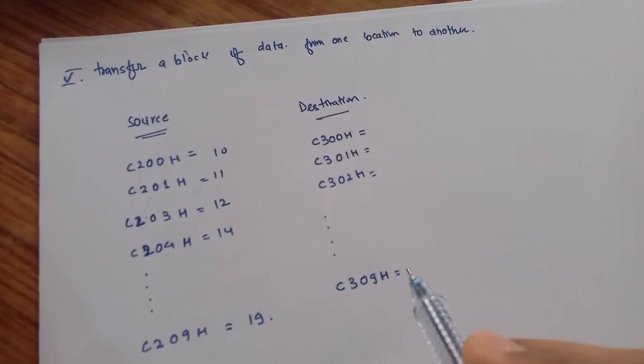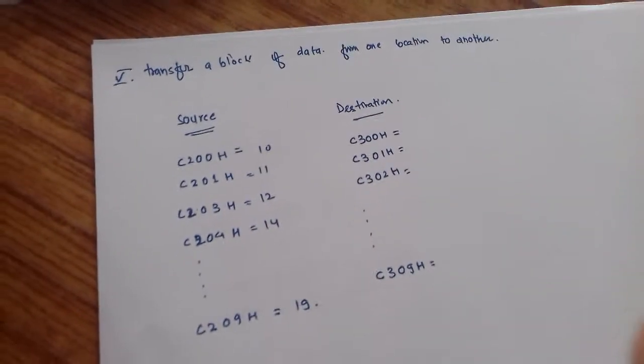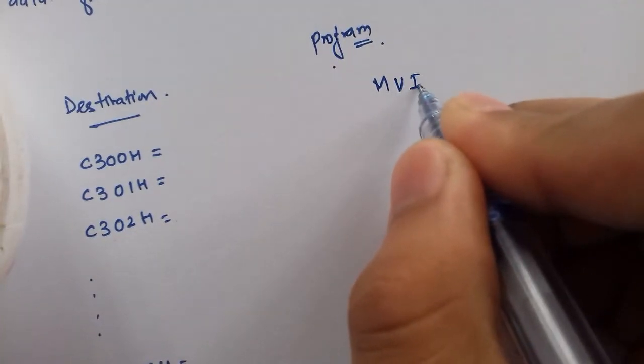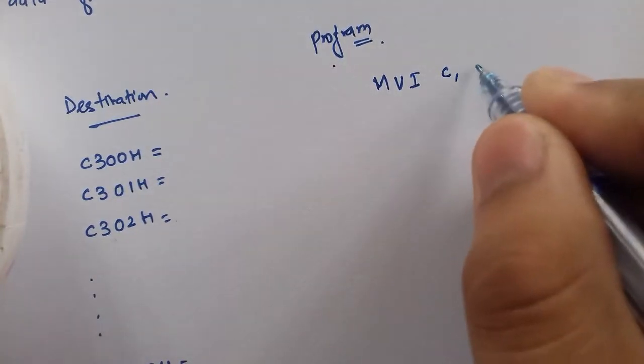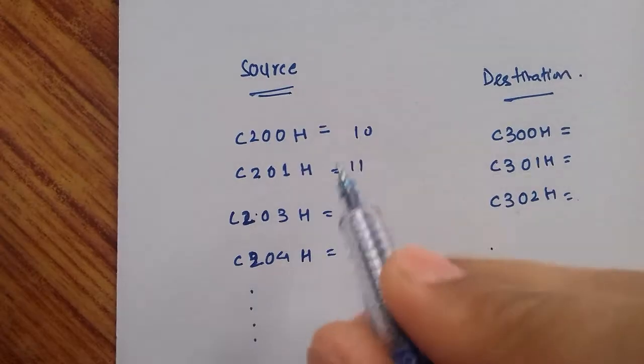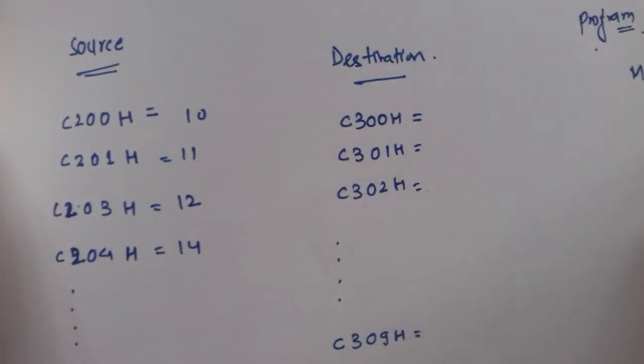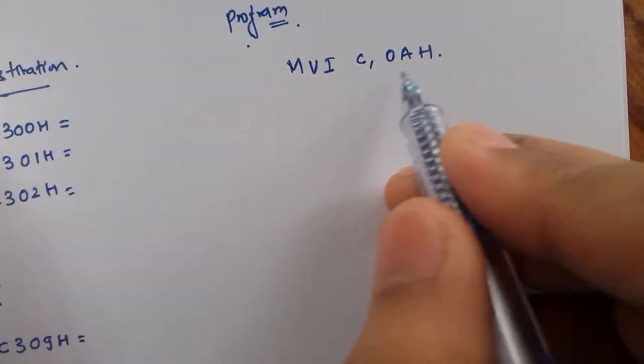So let's begin coding. Now what we do is we initialize a counter. So let us move an immediate value of 0A to C. That is, we have 10 numbers of data in this table, so we initialize a counter of 10.